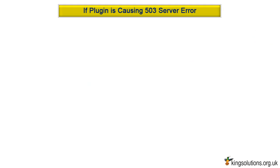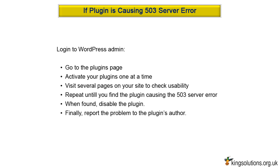If a WordPress plugin was causing the 503 server error, you should be able to log into your WordPress admin area. When logged in, go to the plugins page and activate your plugins one at a time. Visit several pages on your site to check usability, and repeat until you find the plugin causing the 503 server error. When found, disable the plugin — you may have to revert to your FTP client or cPanel file manager again for this step. Finally, report the problem to the plugin author. If this resolved the 503 error, then you do not need to follow the rest of these instructions. You are done.